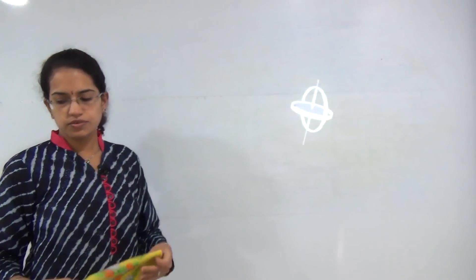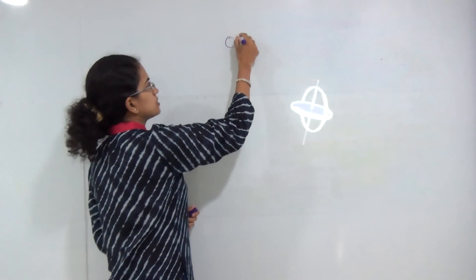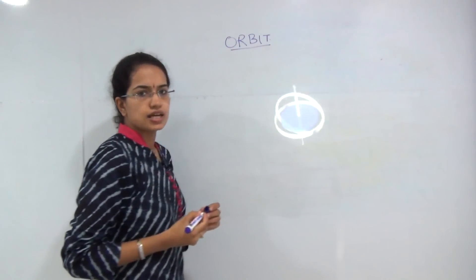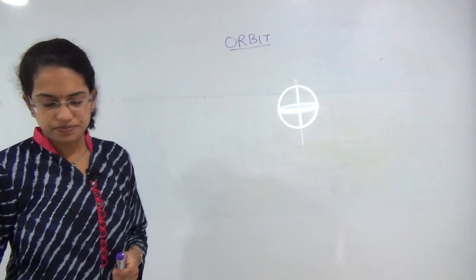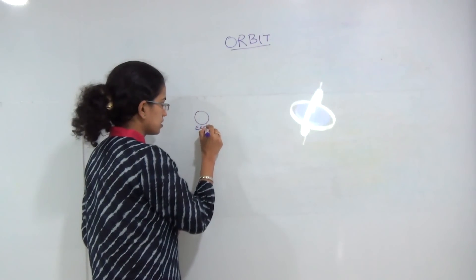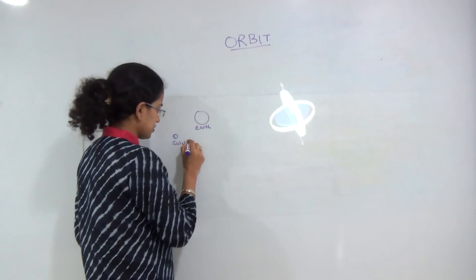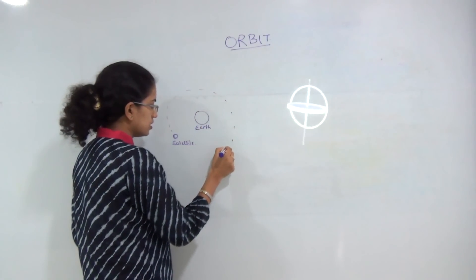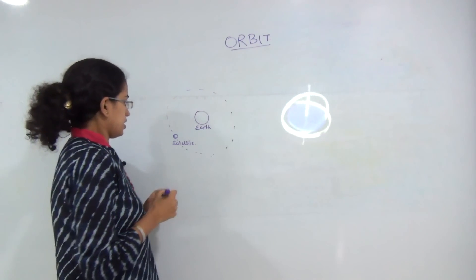Welcome to today's session. Today we will be talking about the concept of orbit, the various terms related to orbit and its path, and the various types of orbit. Firstly, let's understand what an orbit is. You have the earth and a satellite, and this satellite moves around the earth in a path which is known as orbit.